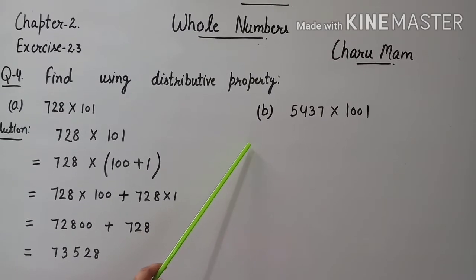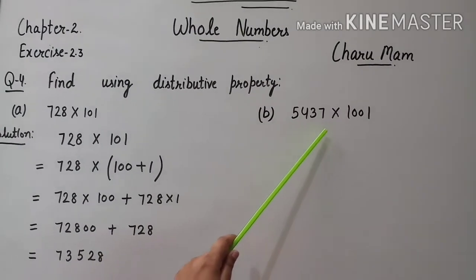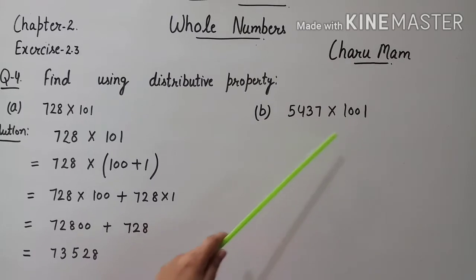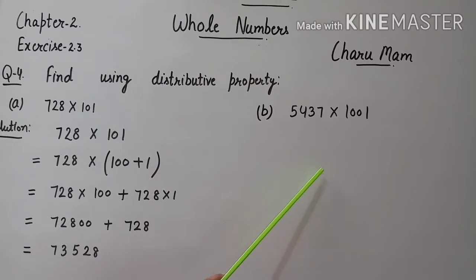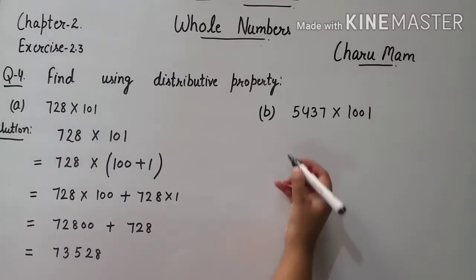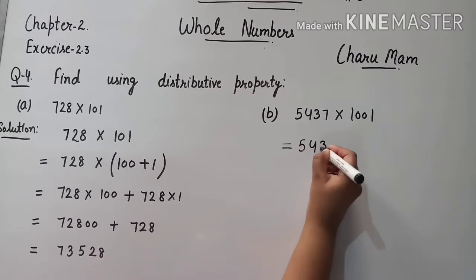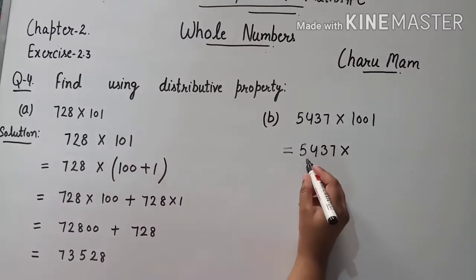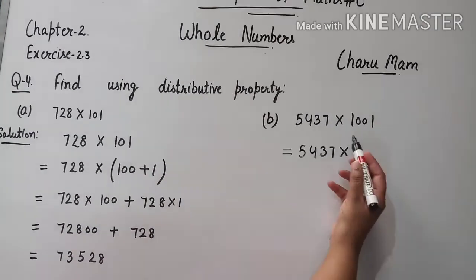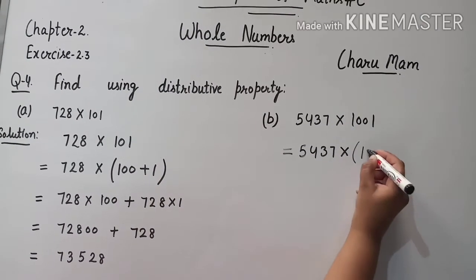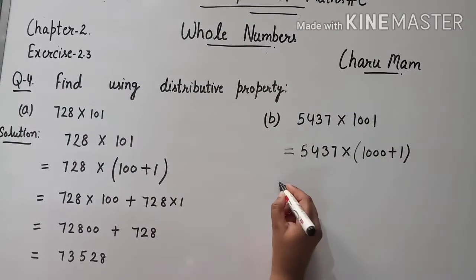Now, question 4 B part: 5,437 multiply 1,001. इसे भी हम distributive property apply करके solve करना है. So, first of all, we write: 5,437 as it is, और 1,001 को हम 1,000 plus 1 की form में write करेंगे.